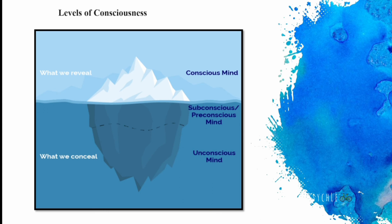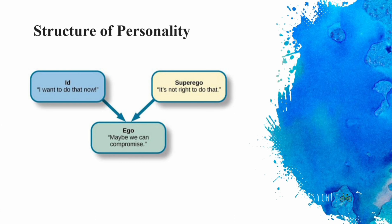For example, we can think about what we had for breakfast. If you are studying, this information is not currently in focus — we are not aware of it in the moment. The third level is the unconscious mind — we are not aware of it at all.